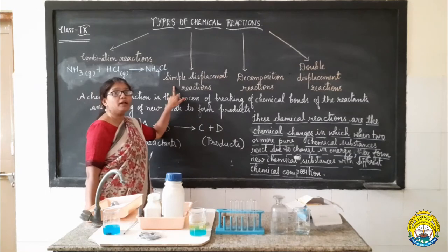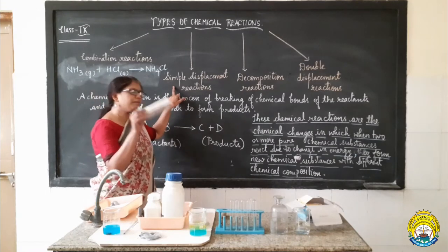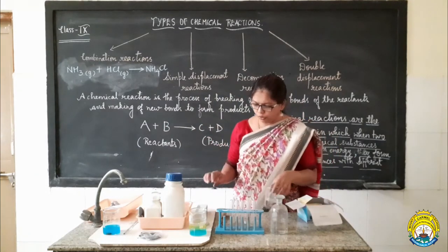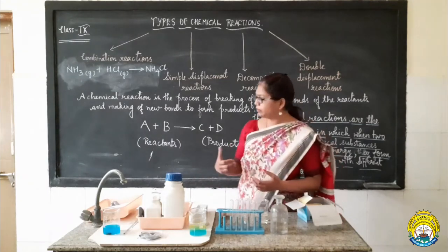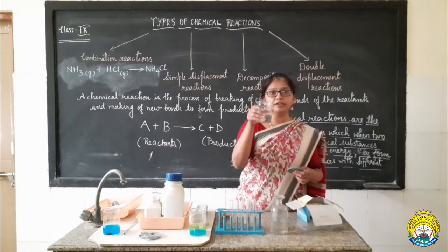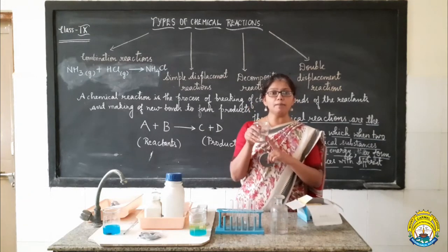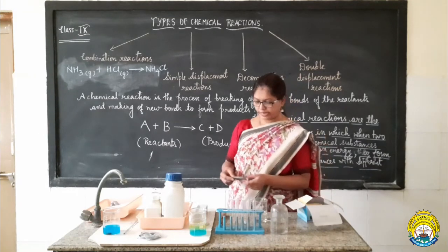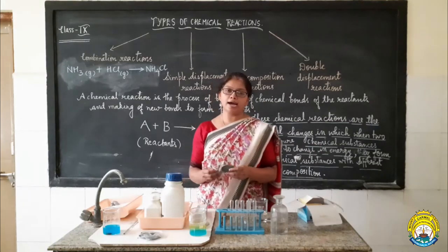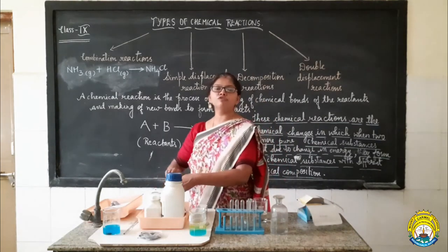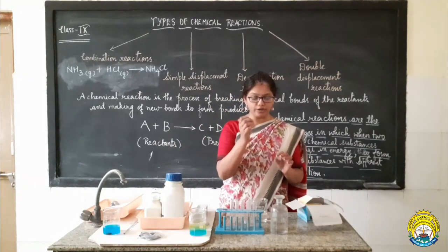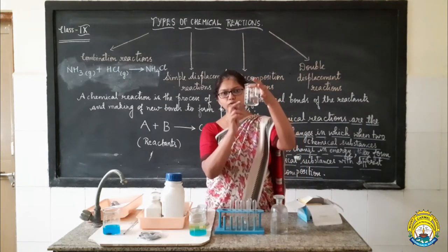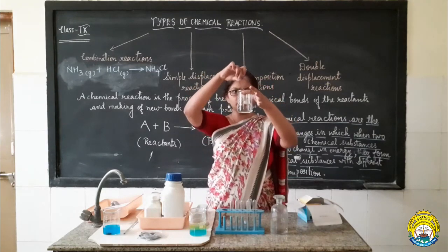Now let us come to the second type of chemical reaction, known as simple displacement reaction. Let me show you something to demonstrate a case of simple displacement reaction. Here in this beaker I have taken a small amount of dilute hydrochloric acid. And to this hydrochloric acid, I am going to add a few pieces of zinc metal strip. This is zinc metal strip. I am going to add it to this beaker which contains dilute hydrochloric acid, and just see what change is observed.